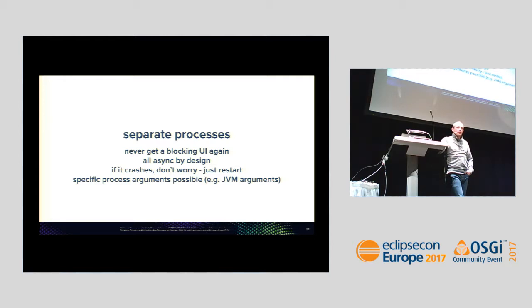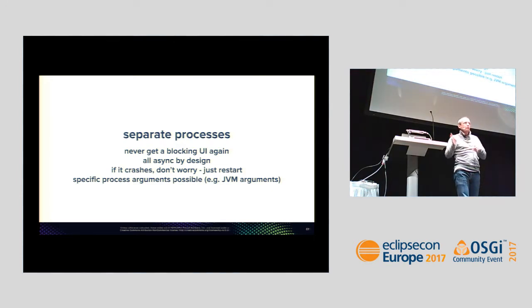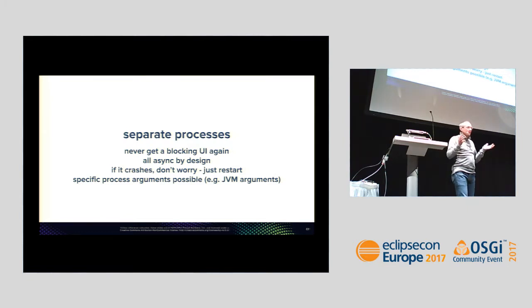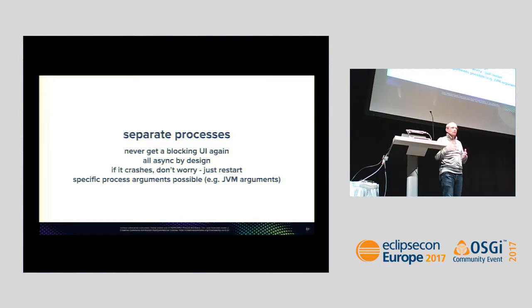Another nice benefit of running as a separate process: the side effects that happen with clients no longer occur. In Eclipse, if you build a plugin and do the wrong thing, it can hang the complete user experience — the UI thread hangs because you did work in it instead of a separate thread. If you do network access from the UI thread and the network goes down, the UI freezes. This cannot happen with language servers because communication is async by default.